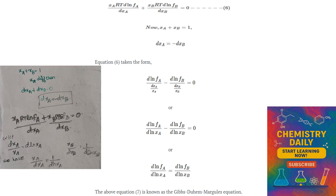Putting the minus sign in the equation gives DXA = −DXB. We know that DXA/XA = d·ln(XA), so XA/DXA = 1/d·ln(XA), and XB/DXA = 1/d·ln(XB). Since RT is a common constant, we can cancel it from the equation, leaving: d·ln(fA)/d·ln(XA) − d·ln(fB)/d·ln(XA) = 0.